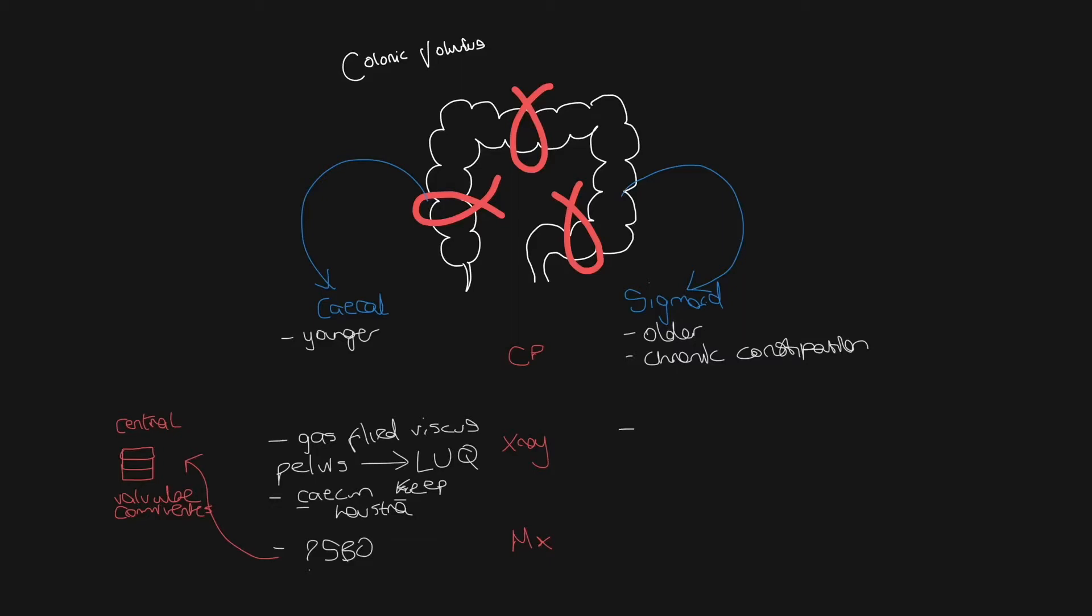In contrast to this, in sigmoid volvulus, you get a dilated gas-filled viscous, which has a very typical U-shape or coffee bean shape, as demonstrated here.